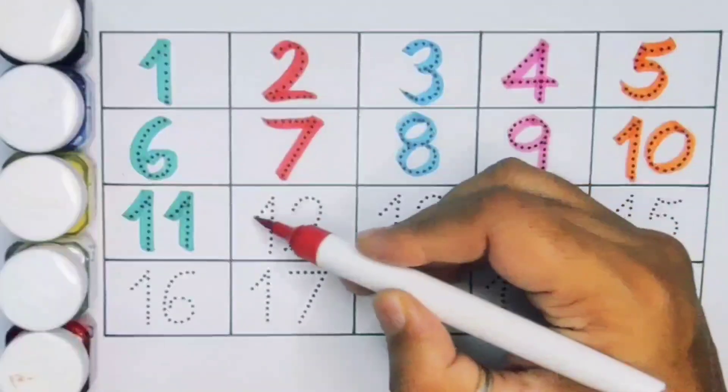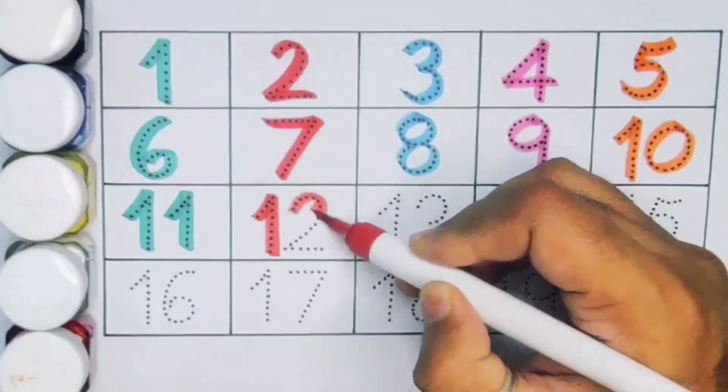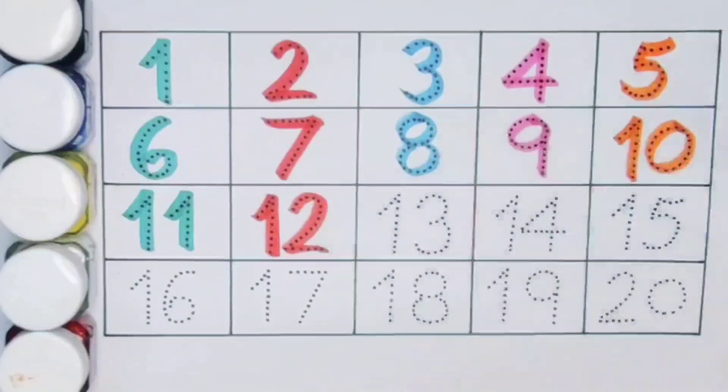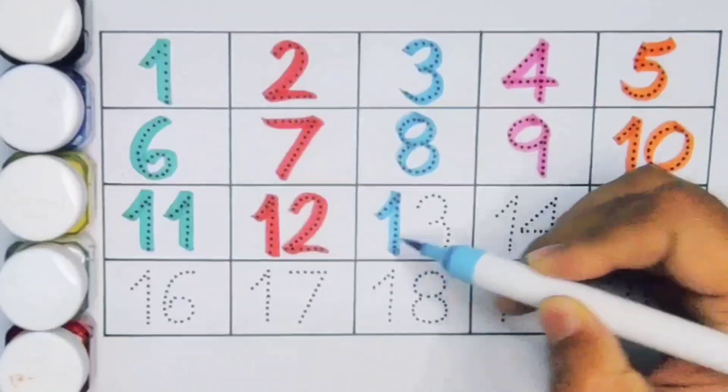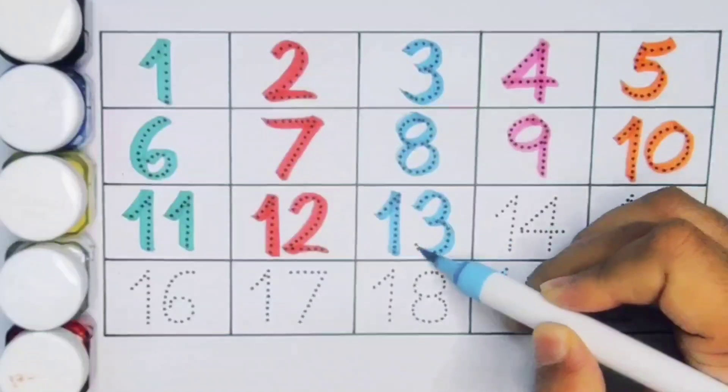Next 12, 1, 2, 12. Number 12. Next kids 13, 1, 3, 13. Number 13.